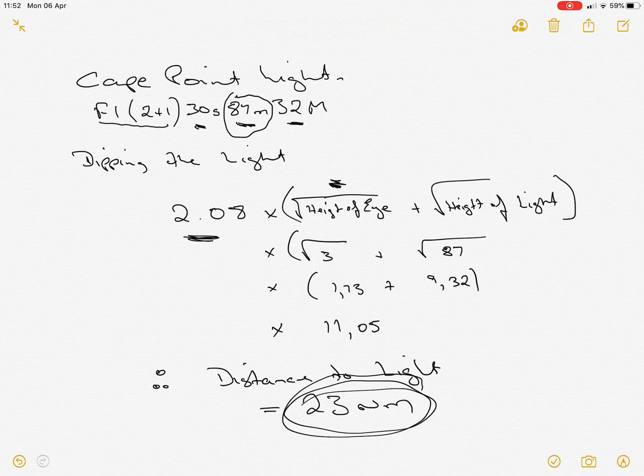This combined with the bearing taken on the light will give us our position. Just a point of interest, these could be used for radio VHF. We could have the height of the aerial of your friend's boat and the height of your aerial and you could establish how far apart you are. You could probably take this factor up to 3 but all that is going to do is make the distance that much further away.